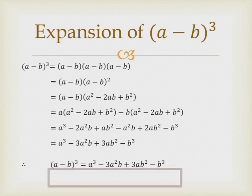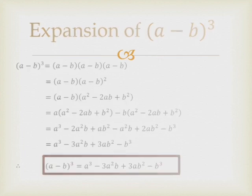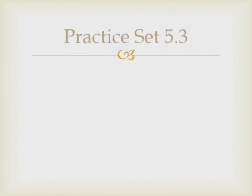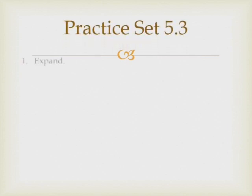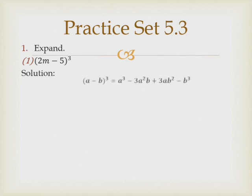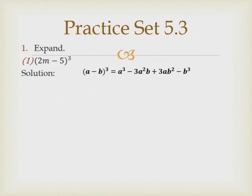Based on this expansion we'll see Practice Set 5.3. Question number 1 says expand. For each and every sum you must write the formula first. So we write the solution, then box the expansion: (a minus b) cubed equals a cubed minus 3a squared b plus 3ab squared minus b cubed.